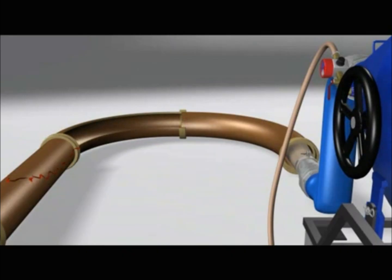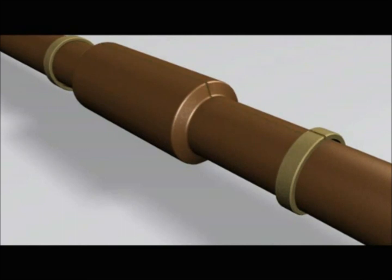The liner can negotiate 90-degree bends as the cutaway shows, as well as different size pipes, taking the shape of the host pipe.